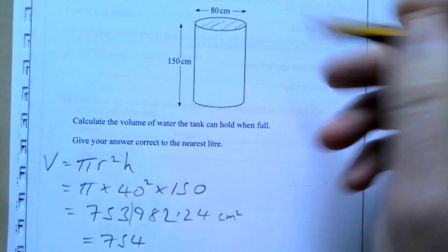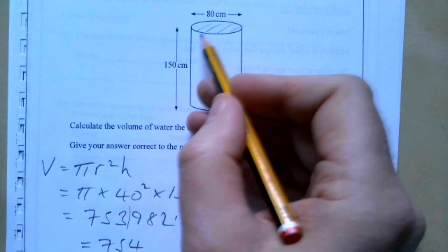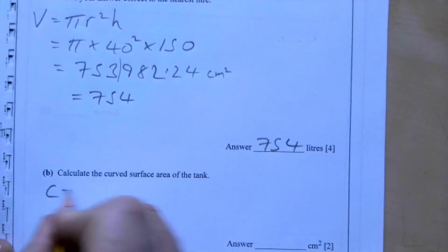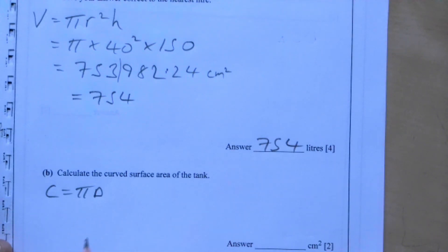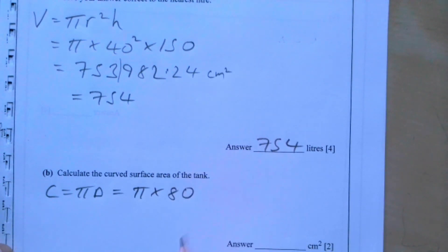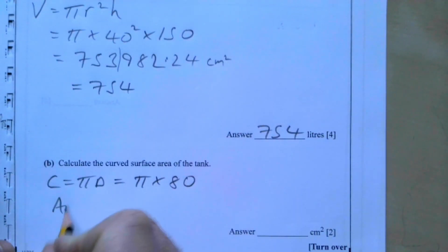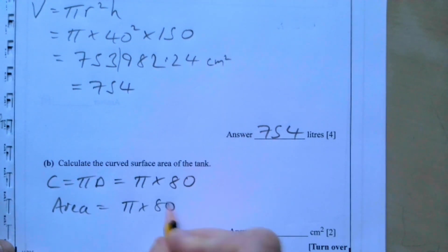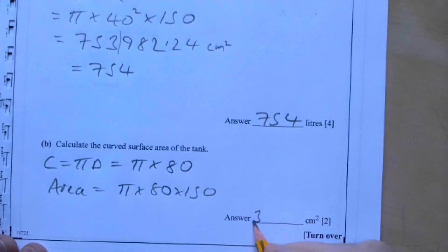The curved surface area is pi times the diameter times the height: pi times 80 times 150, which gives 37,700 square centimetres.